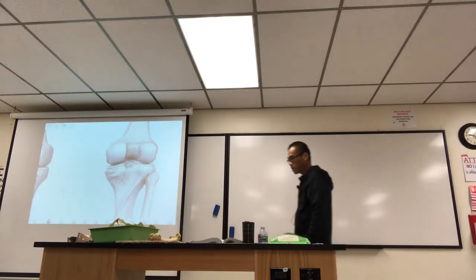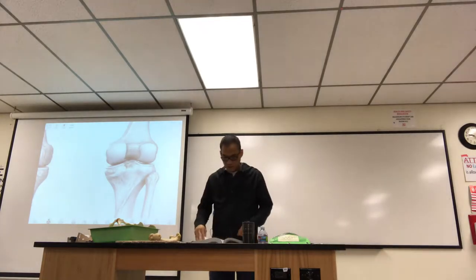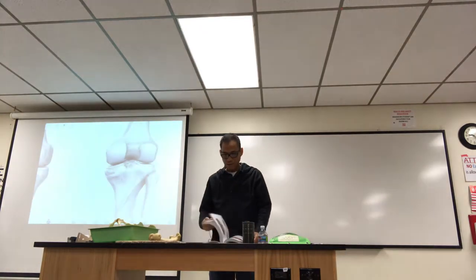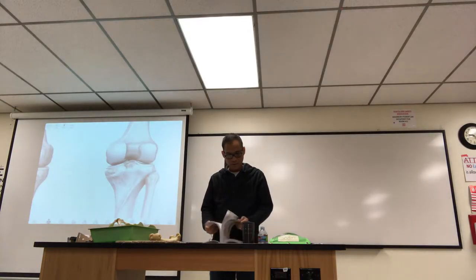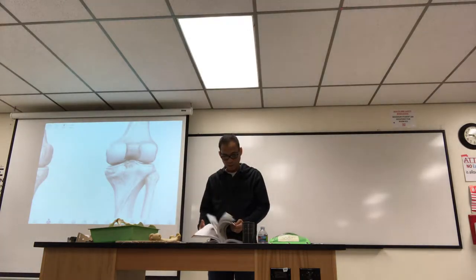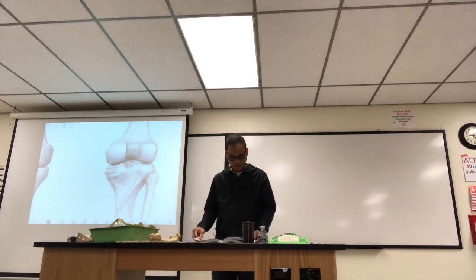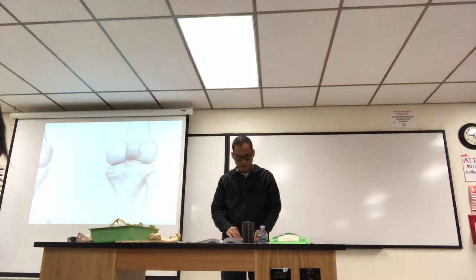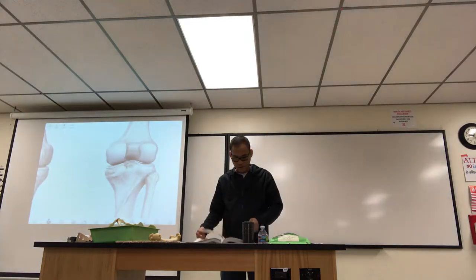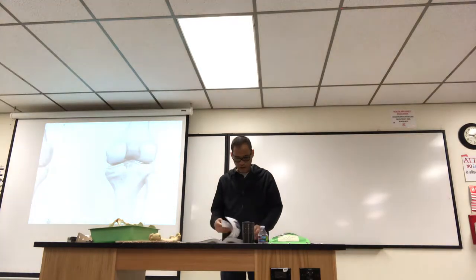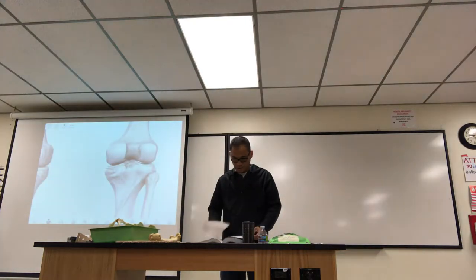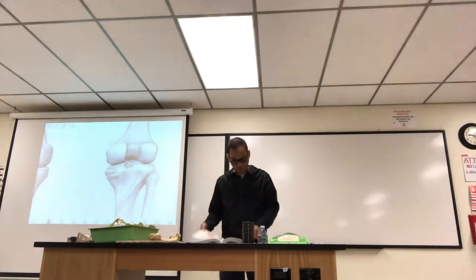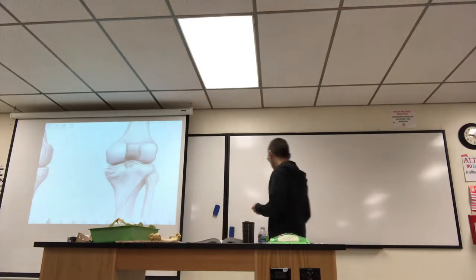We'll continue on with the knee. Let me give you page numbers. In the Atlas, the knee section with bones of the knee, ligaments of the knee starts on page 428. There are a lot of good figures all the way through 437.